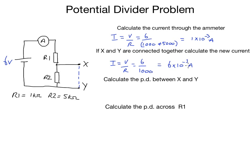Next, we have to calculate the PD between X and Y. This is assuming that we have lost that join again. So I will rub it out so we can be clear what we're doing. What we're doing instead here is connecting a voltmeter between X and Y.